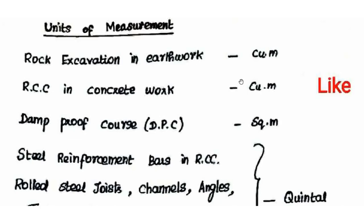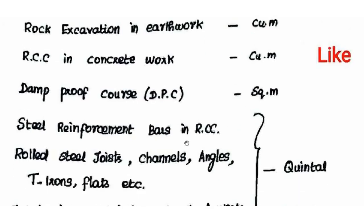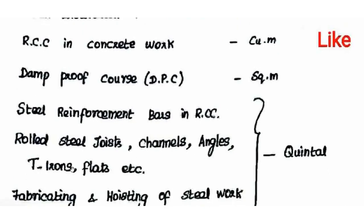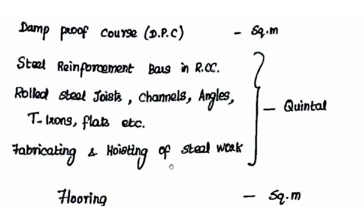Other units of measurement in estimation: RCC (reinforced cement concrete) is measured in cubic meters. Damp proof course (DPC) is measured in square meters (length × width). Steel reinforcement bars, rolled steel joists, channels, angles, and flats are measured in quintals. Fabrication work is also measured in quintals.